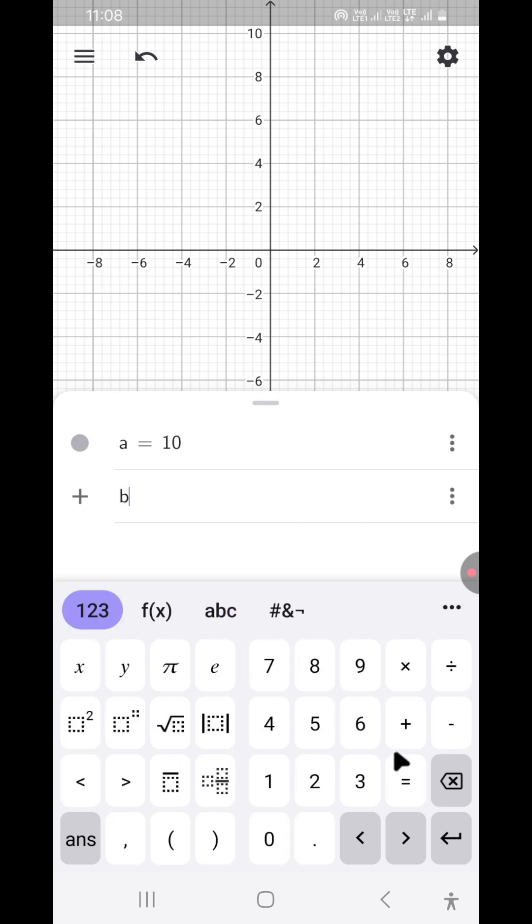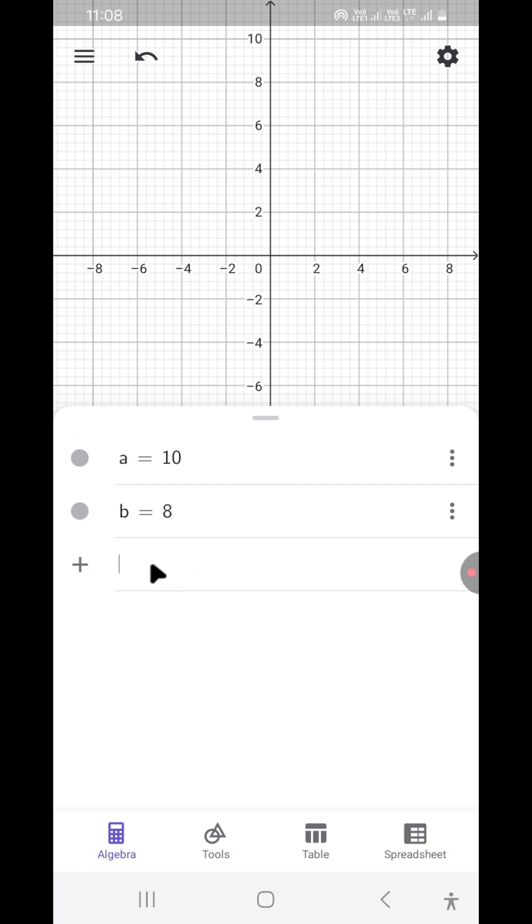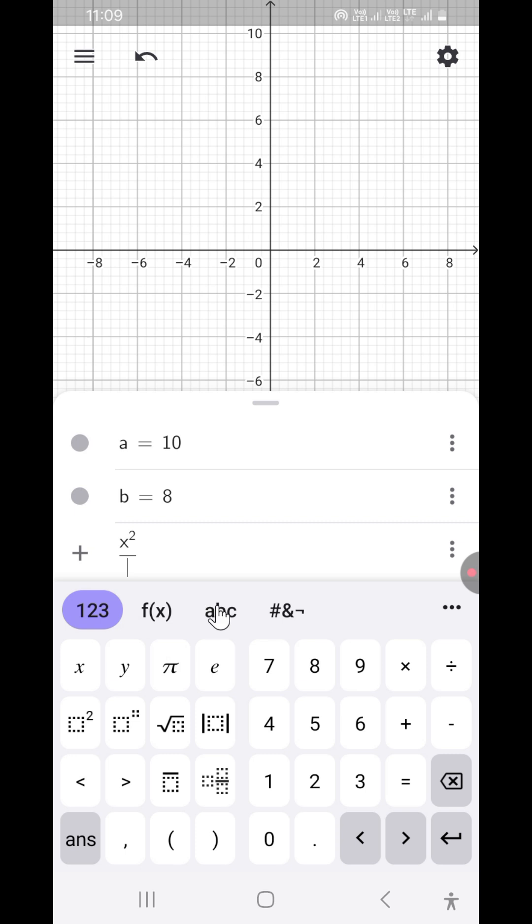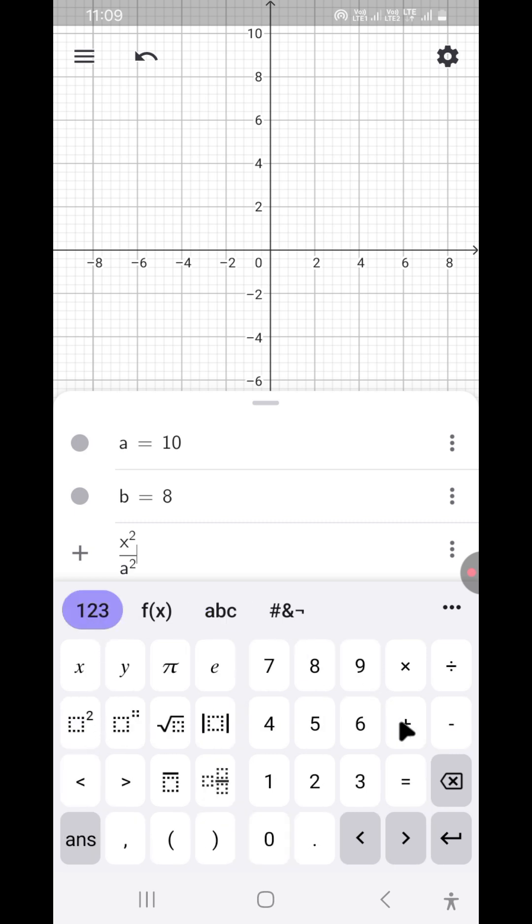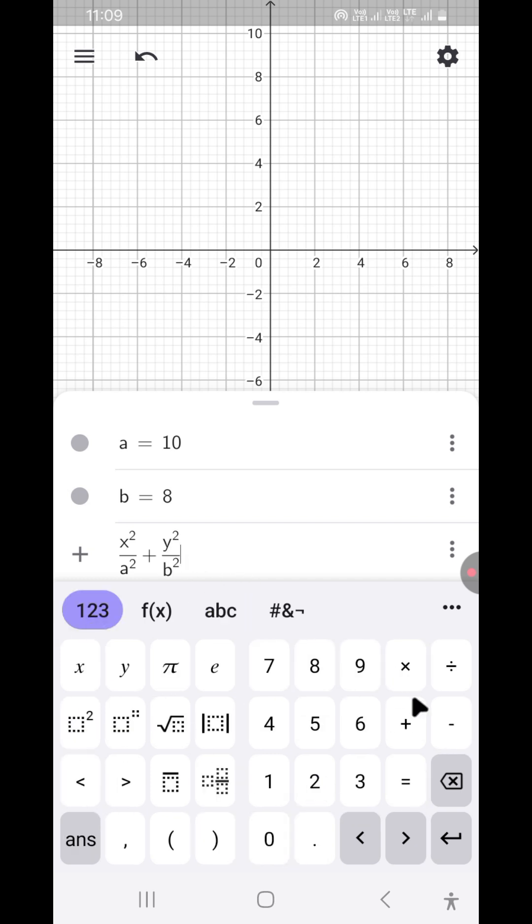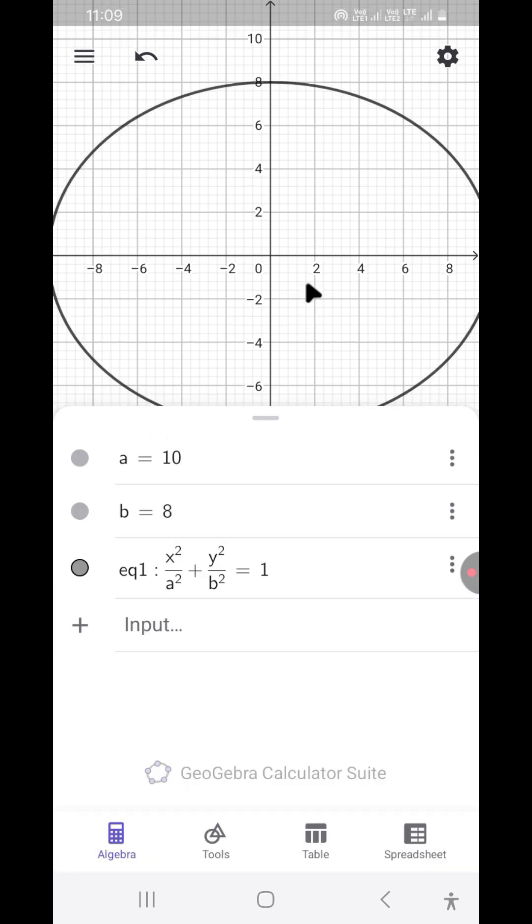And b, the semi-minor axis length, as equal to say 8. Then let us draw the ellipse. So x square divided by a square plus y square divided by b square is equal to 1. So this is the ellipse.